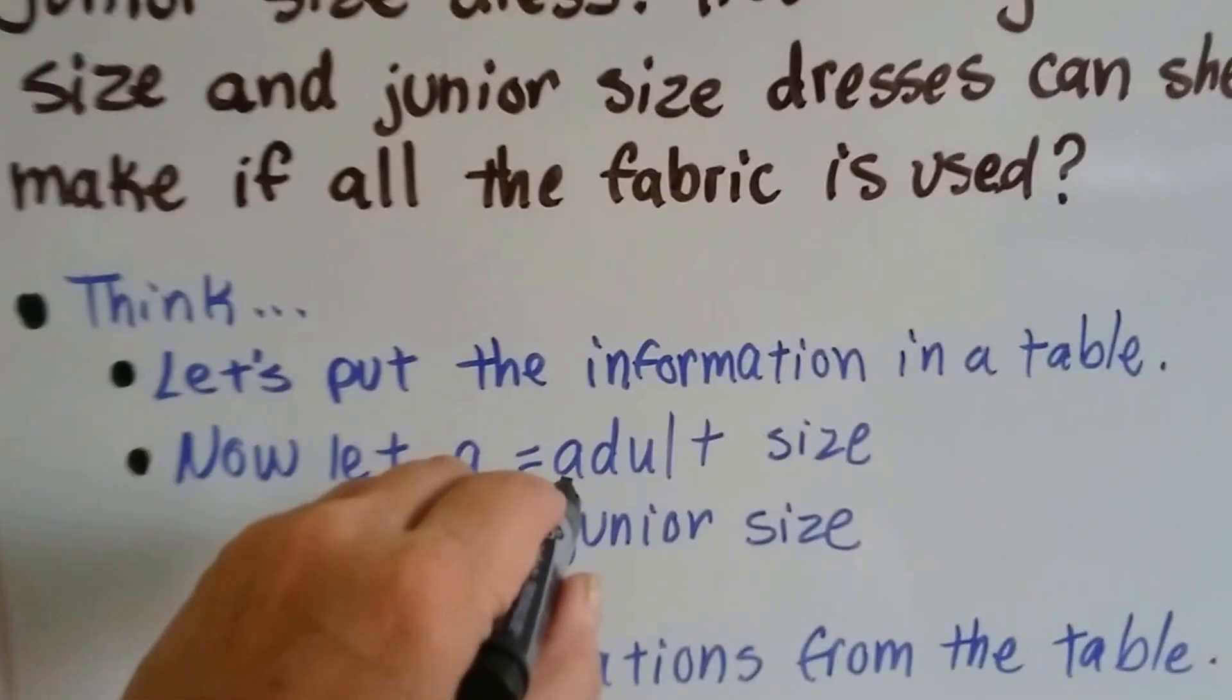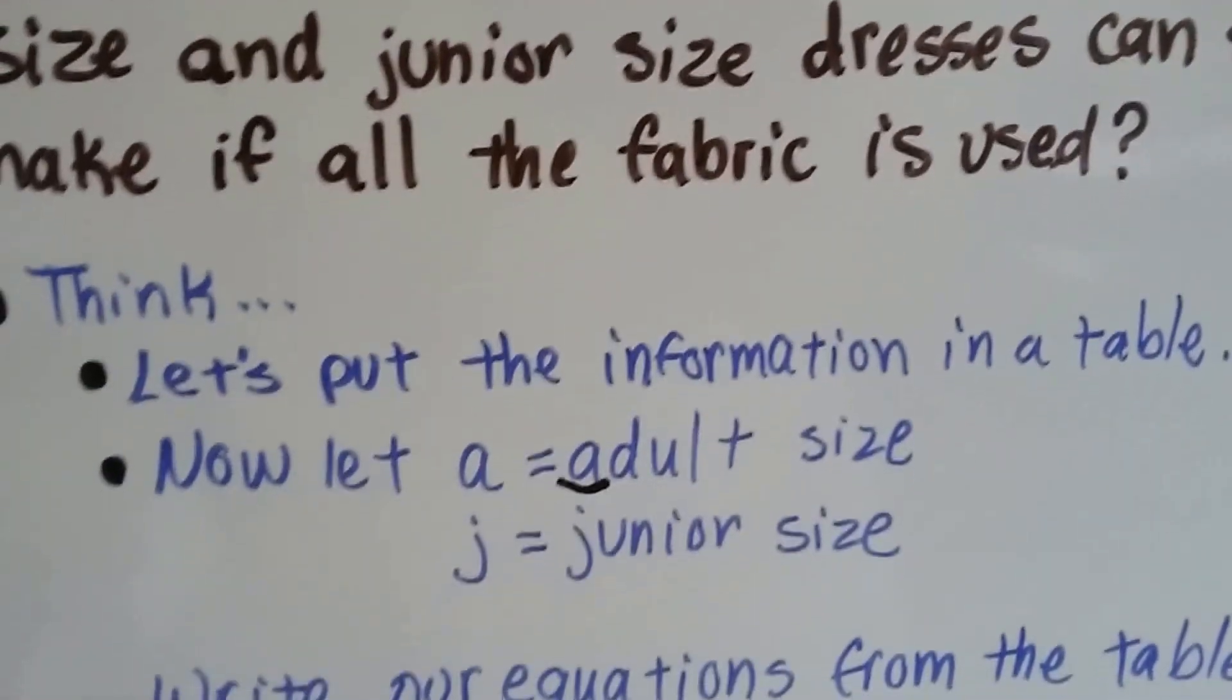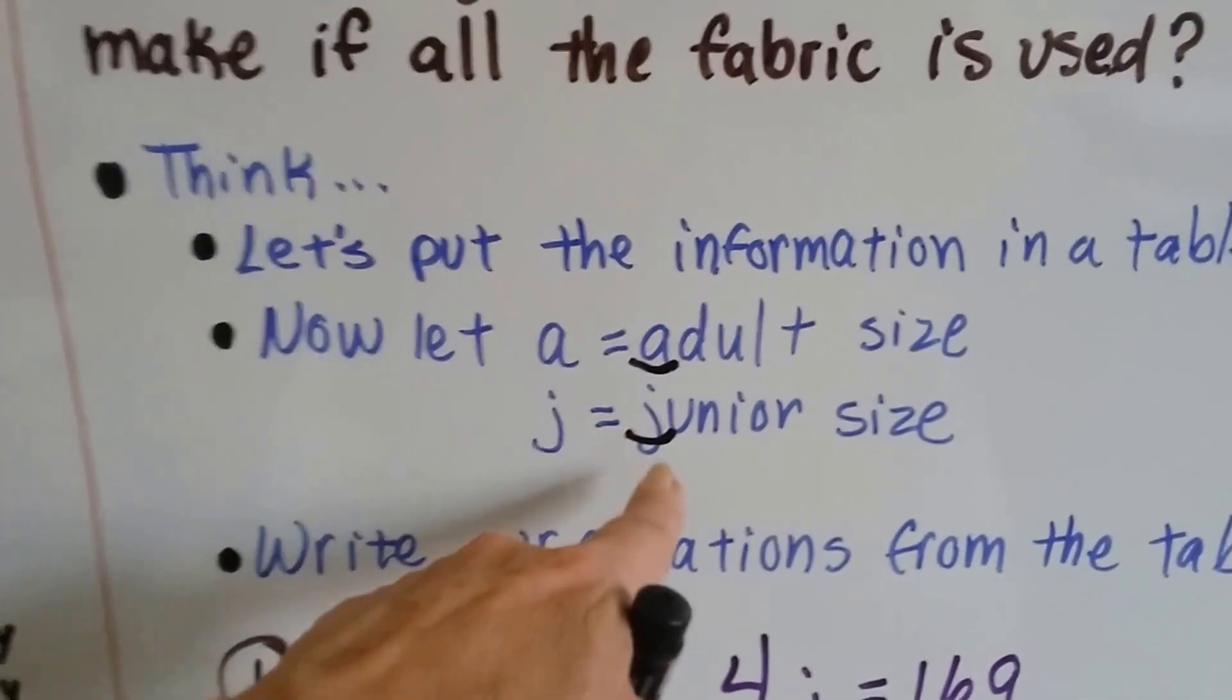So we're going to let A equal adult because that makes sense. It starts with an A, doesn't it? And we're going to let J be the junior because it starts with a J.